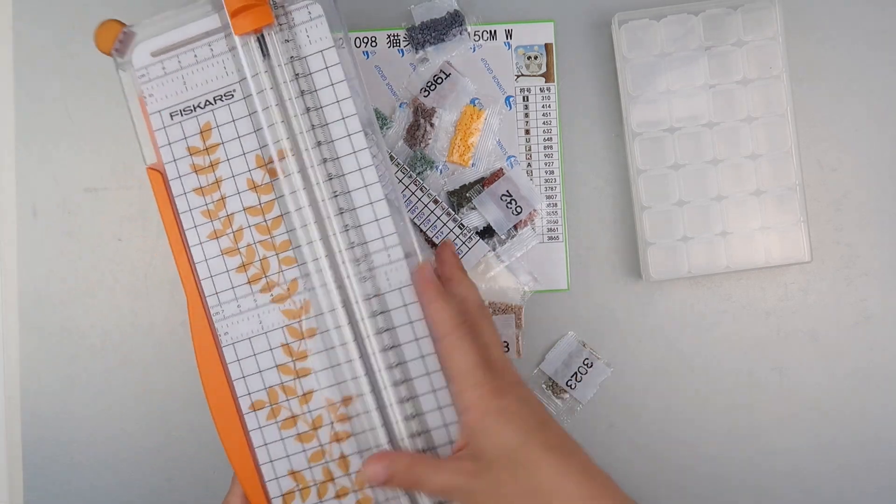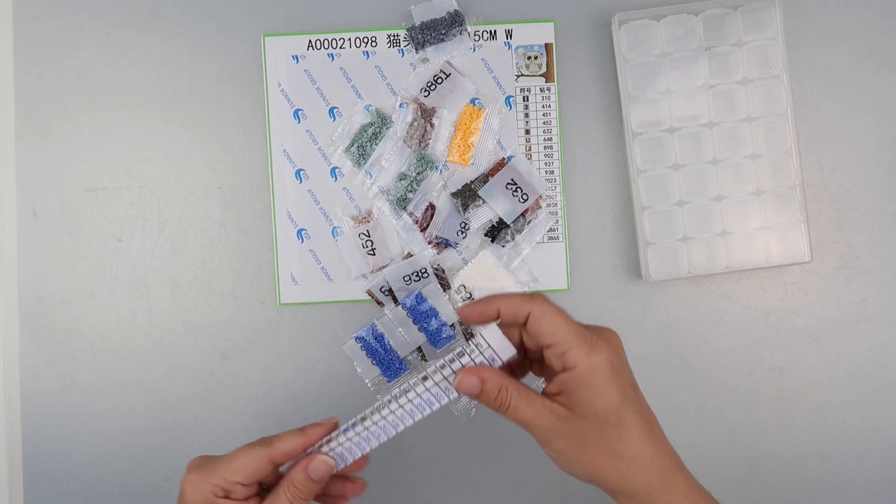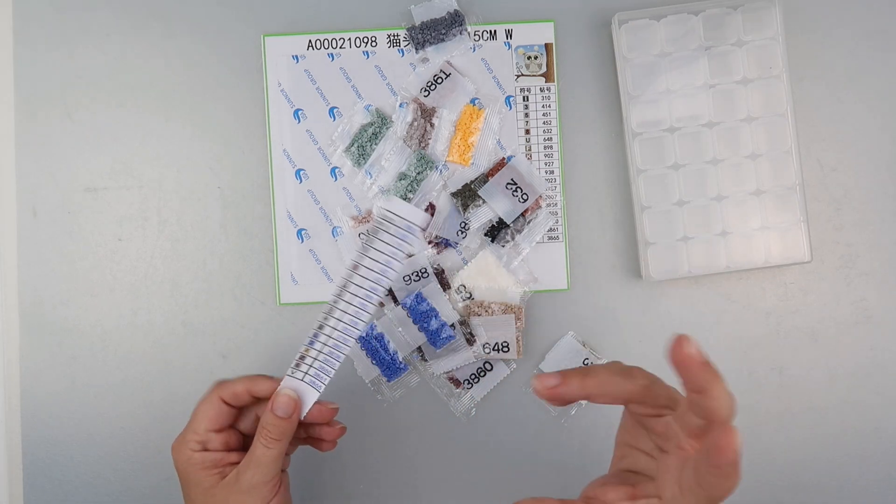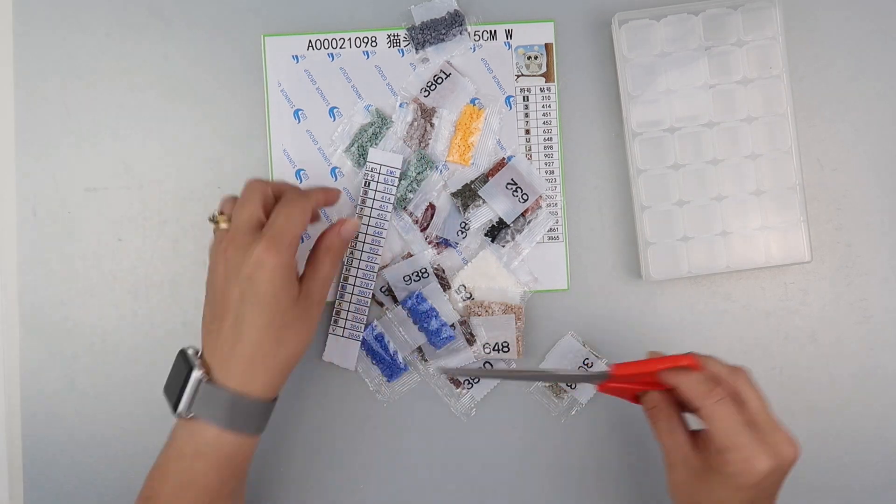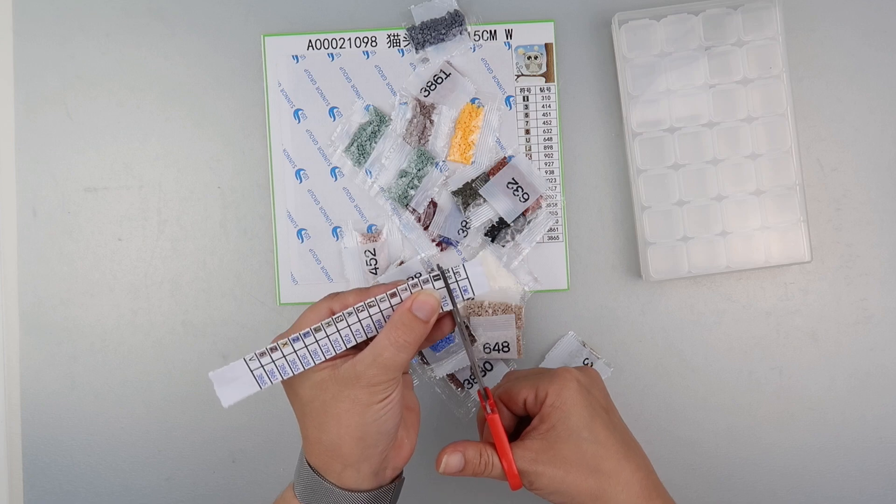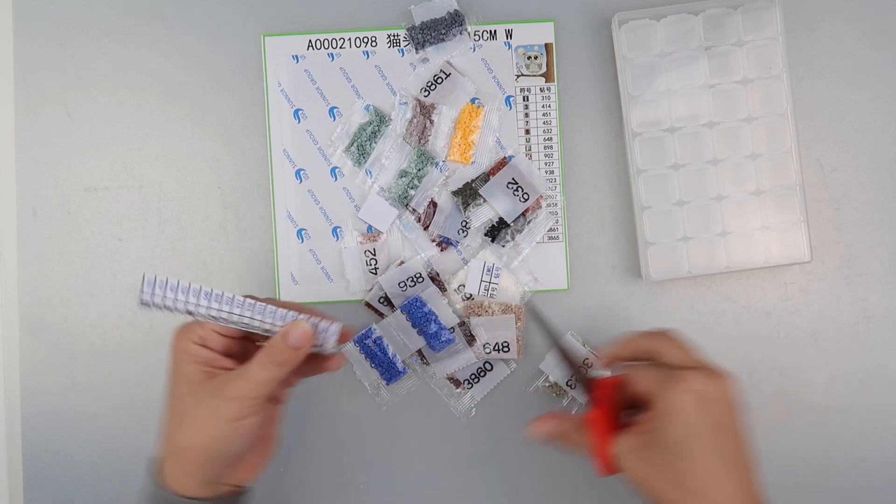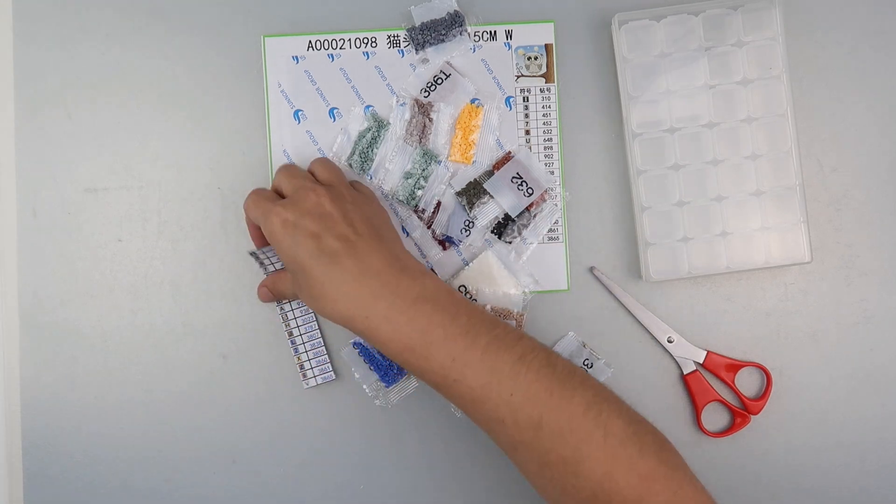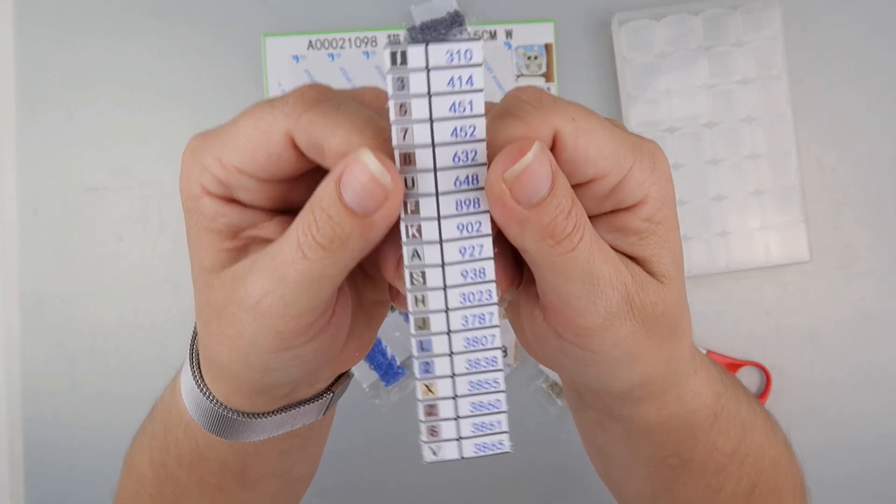I personally am using the 12 by 12, but that's because I do scrapbooking. I don't think you'd need it for diamond painting—you could get away with a smaller one. I'm going to chop off the parts at the top and bottom that I don't need, so all I have purely got now is the symbols and the numbers.